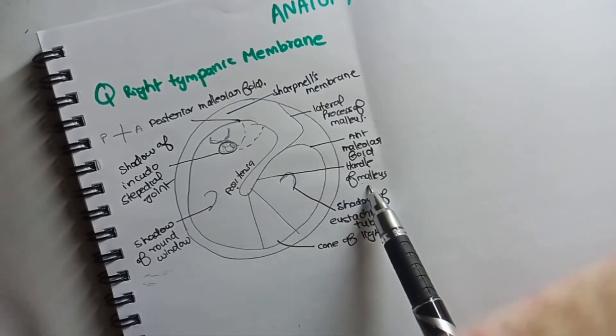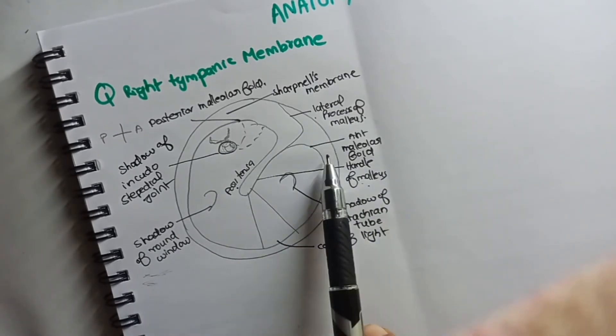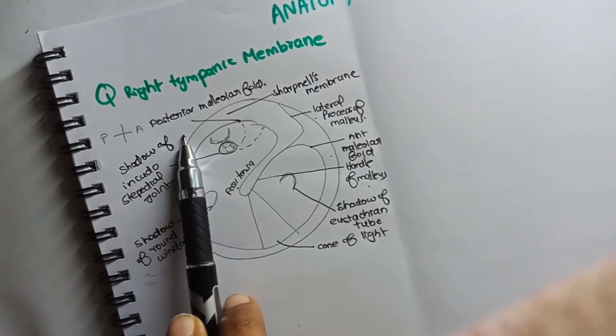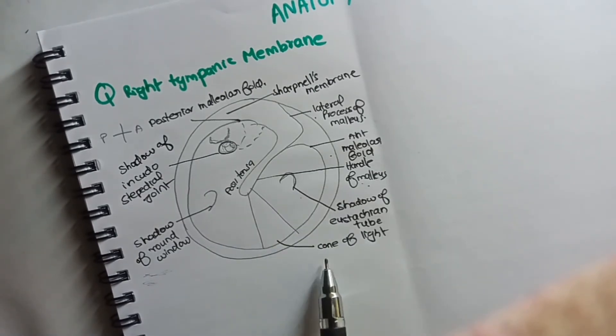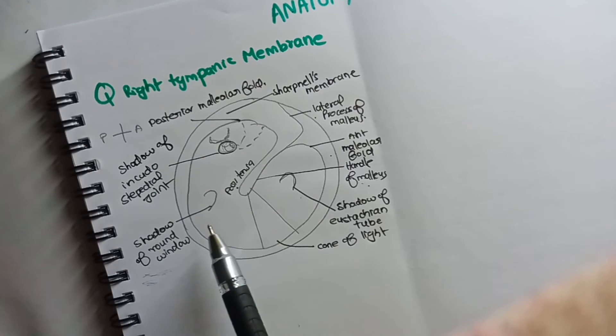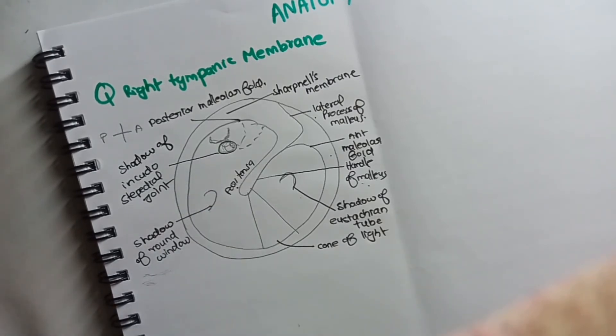Anterior and posterior malleolar folds, and then the shadow of eustachian tube, the cone of light, shadows of round window and incudostapedial joint.